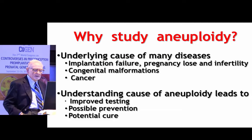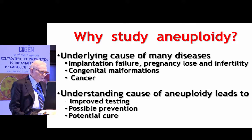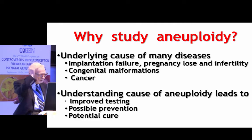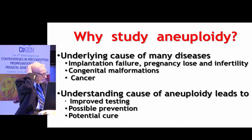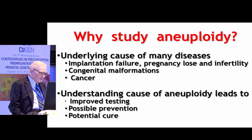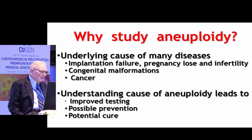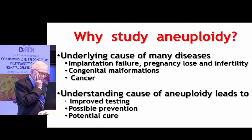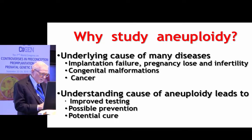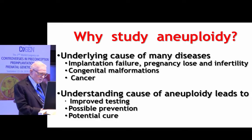So why do we want to study aneuploidy in the first place? We know that aneuploidy is the underlying cause of many different human diseases related to implantation failure, pregnancy loss, and infertility. It is the cause of congenital malformations and, in many instances later in life, the cause of cancer. Understanding the cause of aneuploidy will not only lead to improved testing and possible prevention, but also the possibility of potential cure. Understanding how aneuploidy comes into being is probably one of the most significant challenges we have to face in the near future.